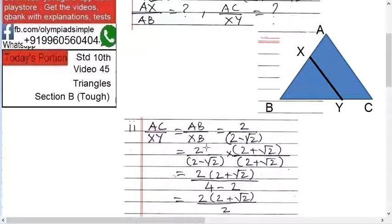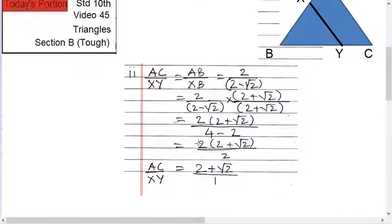So, it becomes 2 upon 2 minus root 2 into 2 plus root 2 on both sides, numerator and denominator. The denominator becomes 4 minus 2. A minus b into a plus b equals to a square minus b square. And, 2 into 2 plus root 2. So, solve it. 2 cancels. And, 2 plus root 2 upon 1. That is the required answer.